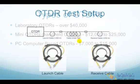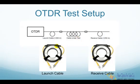Generally, OTDRs are used for testing with a launch cable and may use a receive cable. The launch cable allows the OTDR to settle down after the test pulse is sent into the fiber and provides a reference connector for the first connector on the cable to determine its loss. A receive cable may be used on the far end to allow measurements of the connector at the end of the cable.